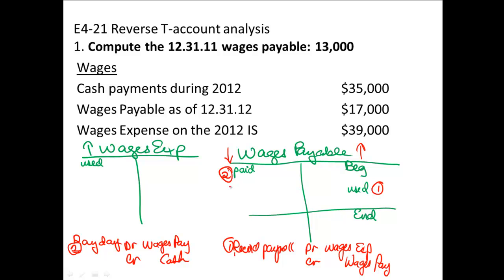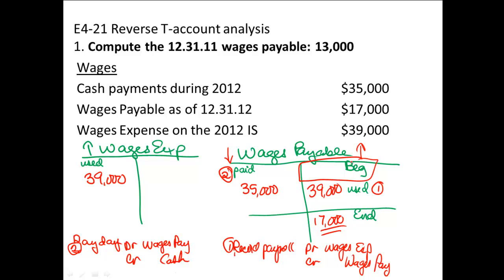Here's our fact situation. Cash payments during 2012 were $35,000 — so we paid $35,000 in cash on payday. Wages payable at the end of the year was $17,000, and wages expense during the year was $39,000 — that's what showed up on the income statement. The missing number is what wages payable's beginning balance was, and I believe it's $13,000. I got that by working backwards: take the ending balance, reverse signs, add $35,000, subtract $39,000. You can check it: $13,000 plus $39,000 minus $35,000 equals $17,000 ending balance.